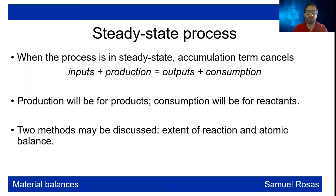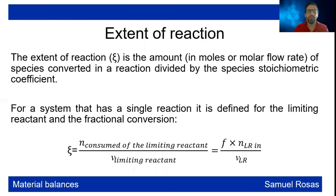Production is focused on products and consumption is for reactants. Two methods can be discussed: the extent of reaction and atomic balance. There is a third method but it is more complicated. Extent of reaction is the amount of moles or molar flow rate of the species converted in a reaction divided by the species stoichiometric coefficient.